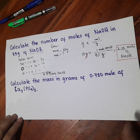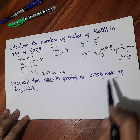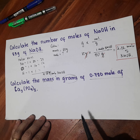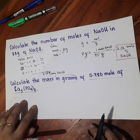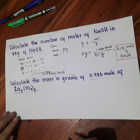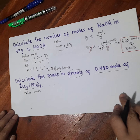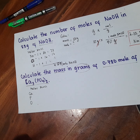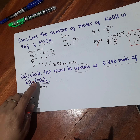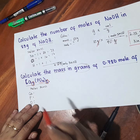What if we have this kind of problem? Calculate the mass in grams of 0.720 mole of calcium phosphate. This is our calcium phosphate compound, Ca₃(PO₄)₂. The first thing we need to do is get the molar mass again. We have calcium, phosphorus, and oxygen. Take note: we have a subscript of 3 outside for calcium, and inside the parentheses there is a subscript, plus a subscript of 2 outside the parentheses.